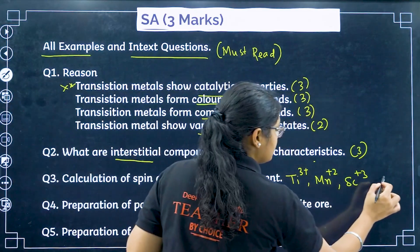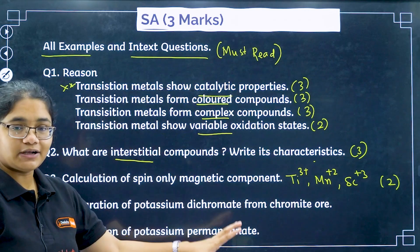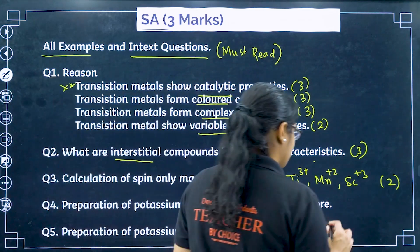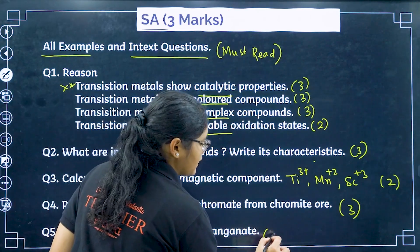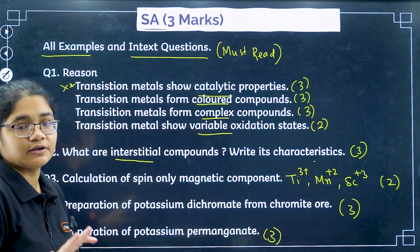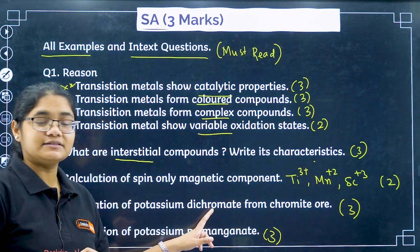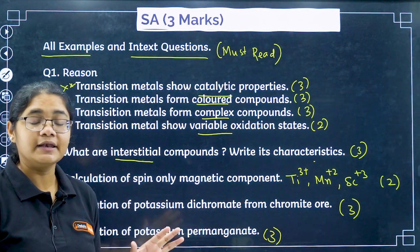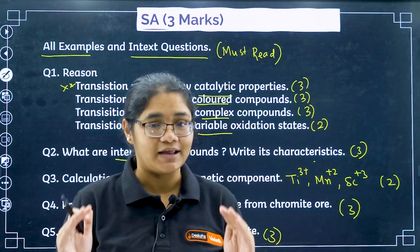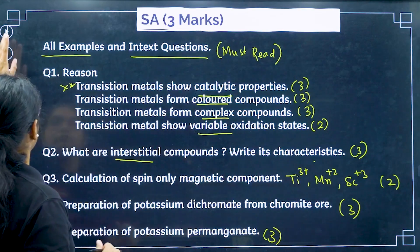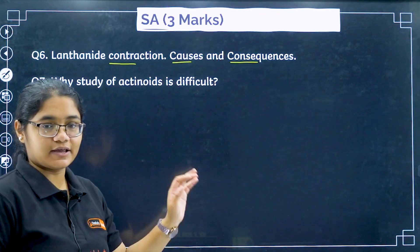Preparation of potassium dichromate from chromite ore is a definite, near-certain question for three marks — or potassium permanganate. Any one of these preparations will be asked. The reactions are a little complicated, so write them again and again. Only balanced reactions will be required, so prepare balanced reactions carefully.